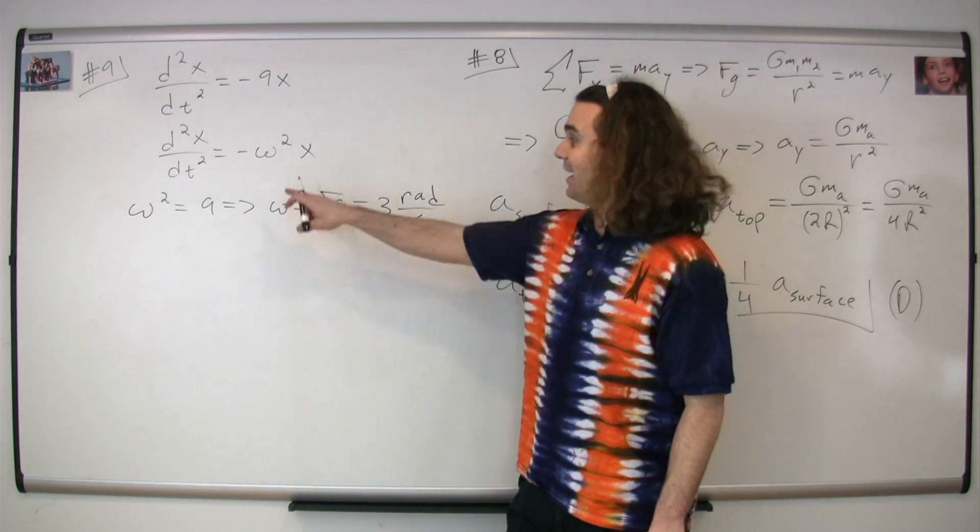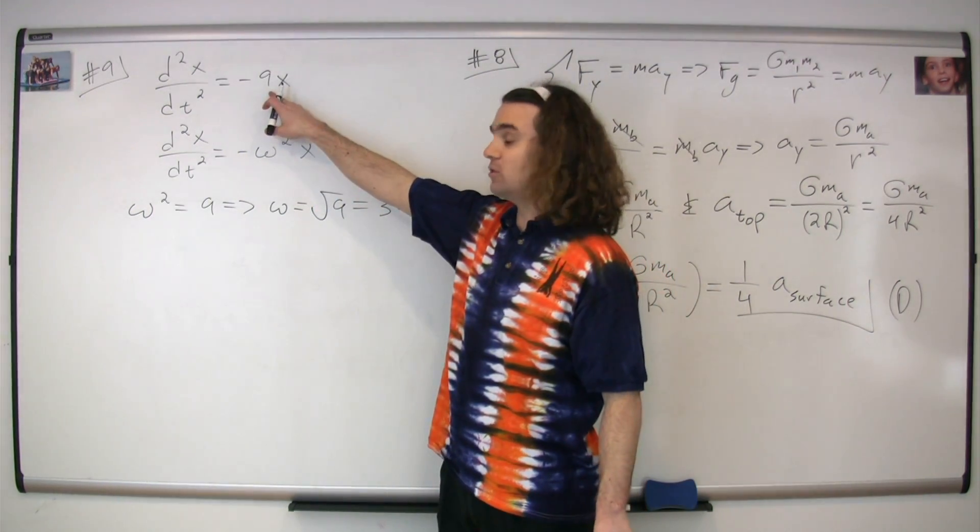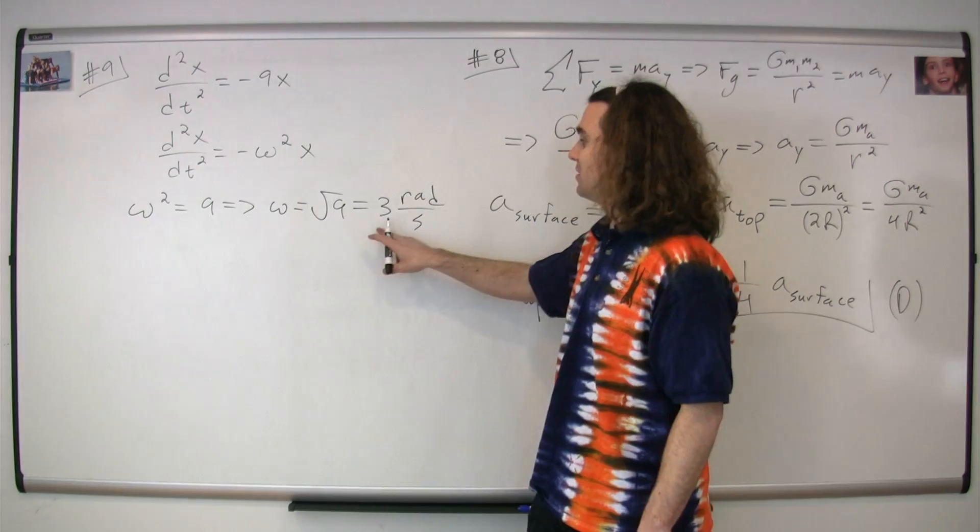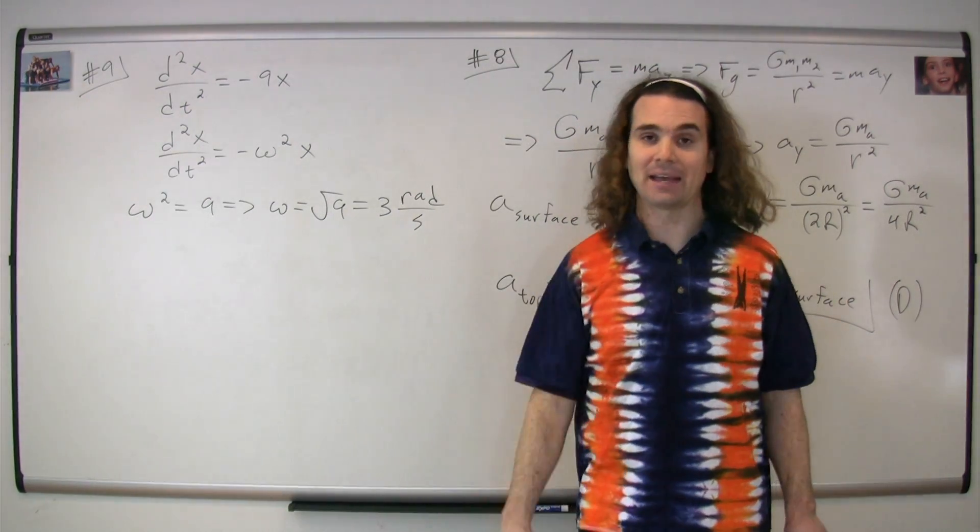Therefore, the angular frequency squared is equal to nine, and we can figure out that the angular frequency is equal to three radians per second.